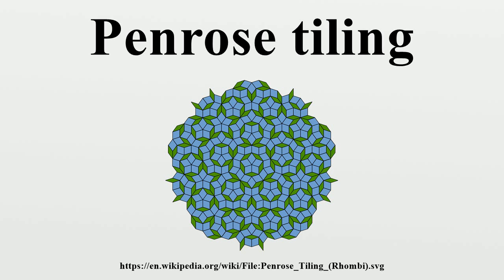Penrose tilings are simple examples of aperiodic tilings of the plane. A tiling is a covering of the plane by tiles with no overlaps or gaps. The tiles normally have a finite number of shapes, called prototiles, and a set of prototiles is said to admit a tiling or tile the plane if there is a tiling of the plane using only tiles congruent to these prototiles.